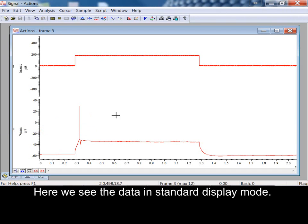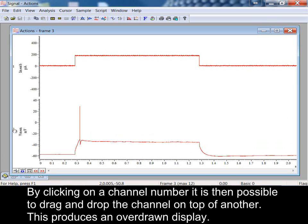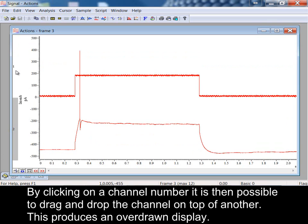Here we see the data in standard display mode. We can optimize all channels by pressing the end key or drag the y-axis of a single channel. By clicking on a channel number, it is then possible to drag and drop the channel on top of another. This produces an overdrawn display.